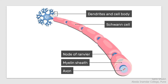Here we can see the structure of the myelinated axon. The axon is covered by myelin sheath, which is formed by the Schwann cells. It is not a continuous layer — it is interrupted at certain places, and that part is called the node of Ranvier, where the myelin coating is absent.